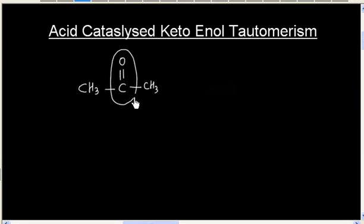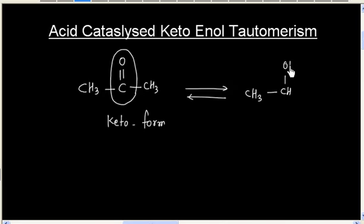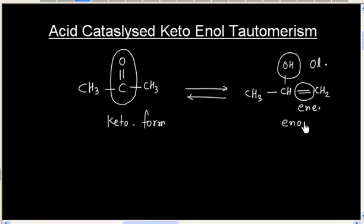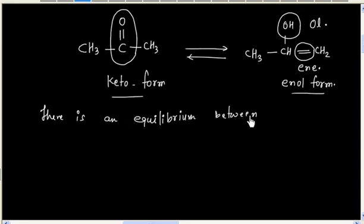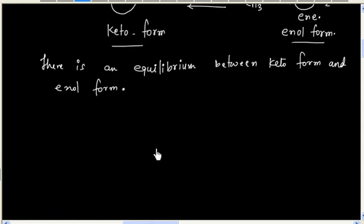This molecule has a keto functional group, so this is called the keto form. Another molecule has an alcohol functional group and also an alkene functional group, so this is called the enol form. We have an equilibrium between keto form and enol form, and this equilibrium is called keto-enol tautomerism.